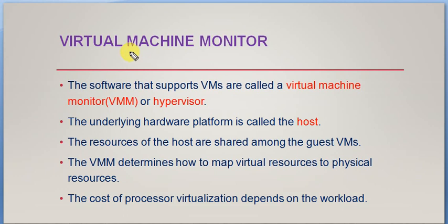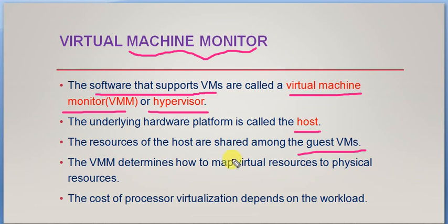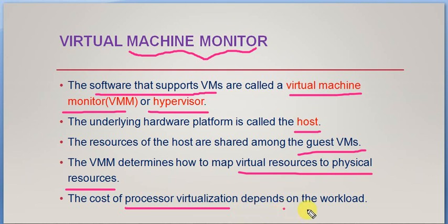The software that supports virtual machines is called a Virtual Machine Monitor, or VMM, also called a hypervisor. The underlying hardware platform is called the host machine, and the resources of the host are shared among different guest virtual machines. The Virtual Machine Monitor determines how to map virtual resources to physical resources. The cost of processor virtualization depends on the total workload of the system.